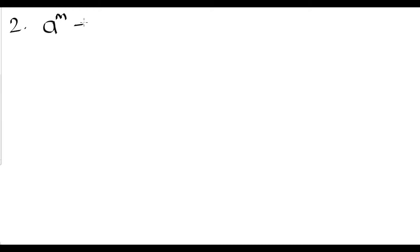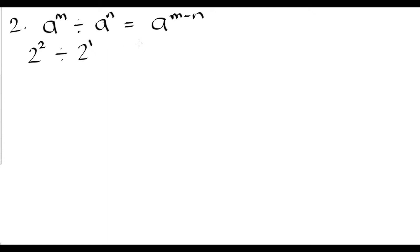Our second law is known as the division rule. This law states that if we have a common base raised to an exponent divided by the same base raised to a different exponent, we can simplify that by writing down our common base and subtracting the exponents. In numbers: 2 raised to the second power divided by 2 raised to the first power equals 2 to the power of 2 minus 1, or 2 to the power of 1.